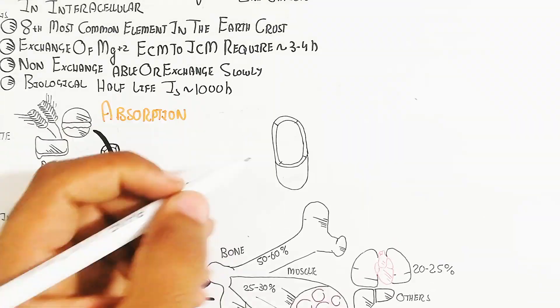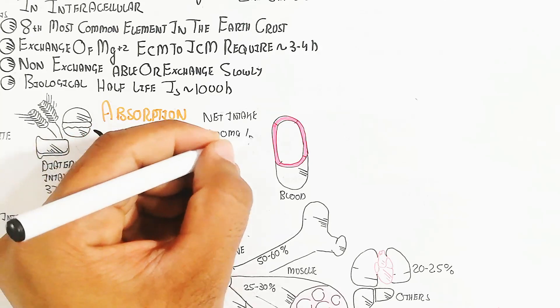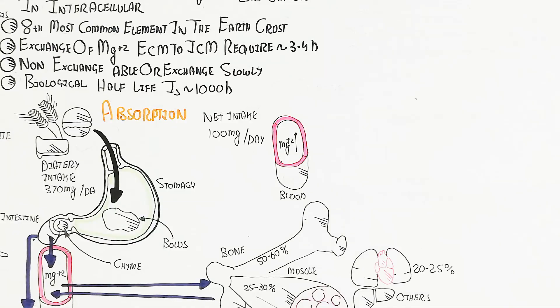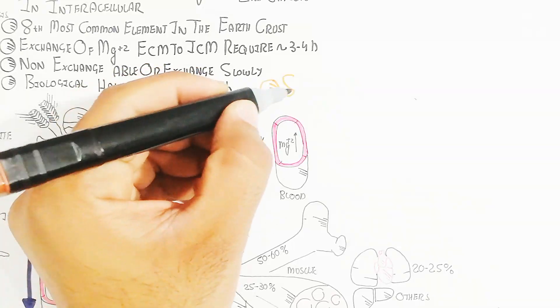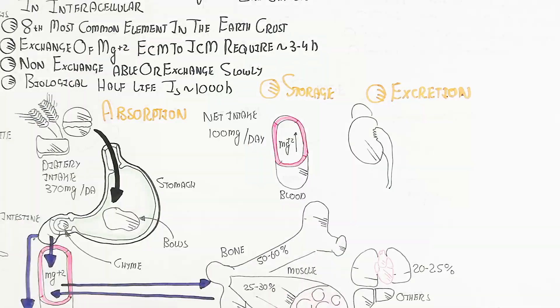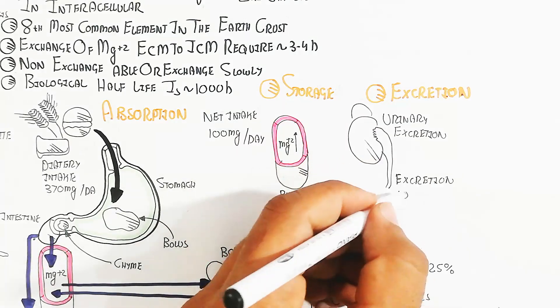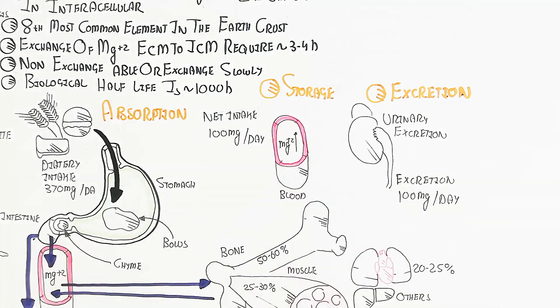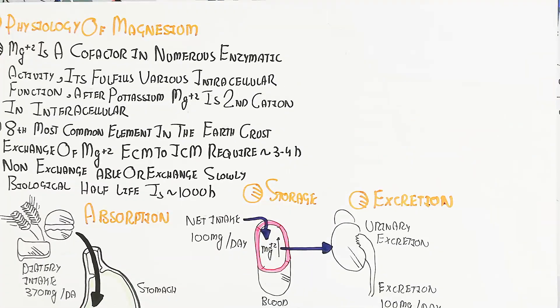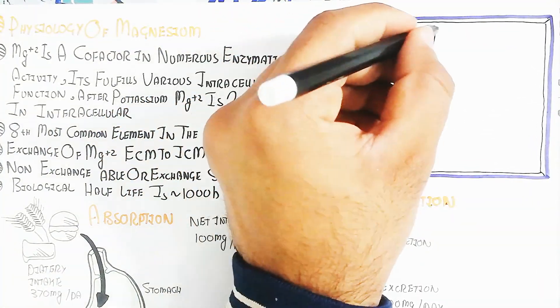Magnesium cannot easily move back into the blood circulatory system from storage. Net intake, for example 100 mg per day, is important because storage is critical. 100 mg per day is important because urinary excretion is 100 mg per day, but you should increase the ratio to 150 mg.